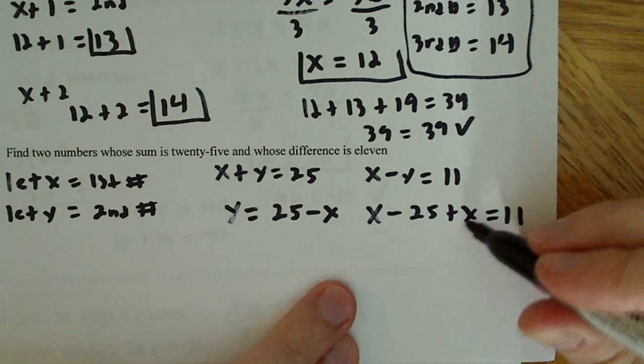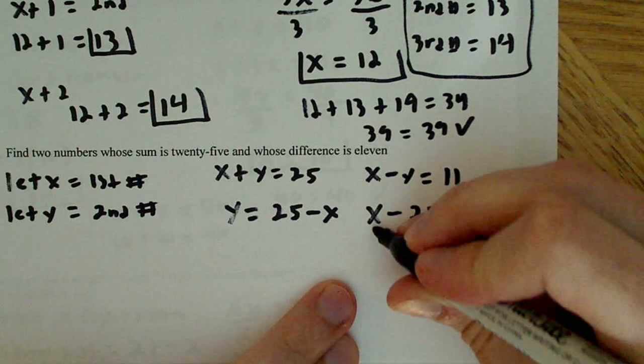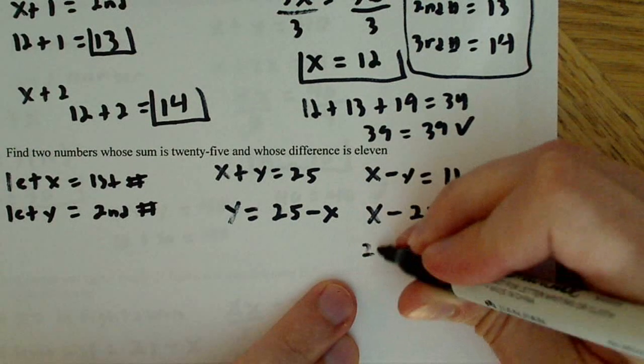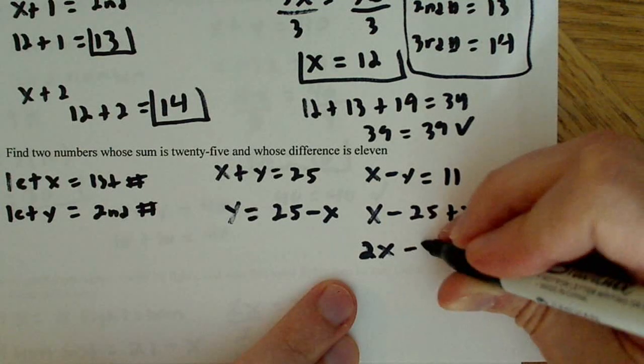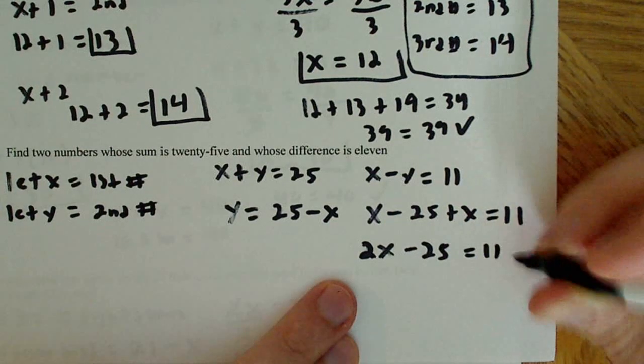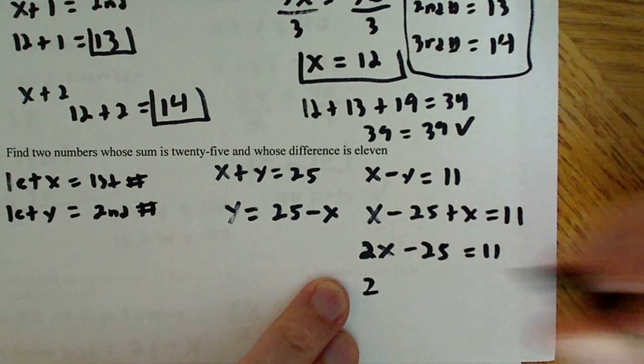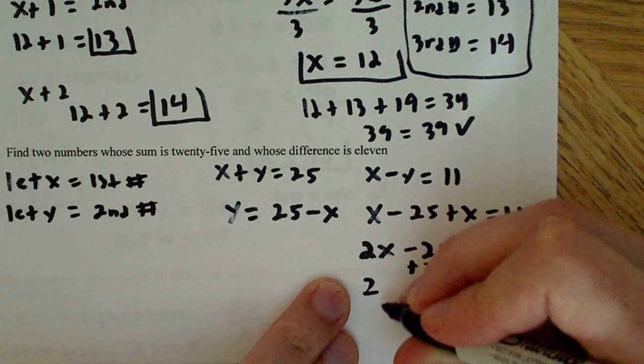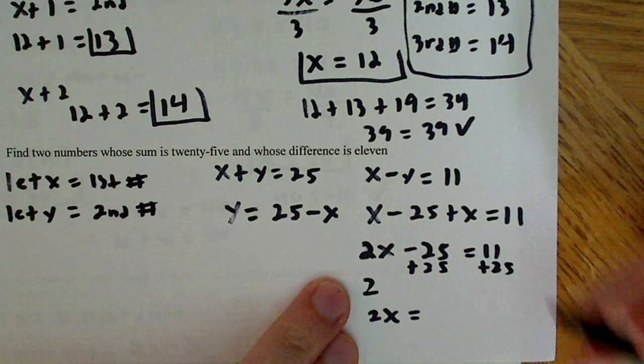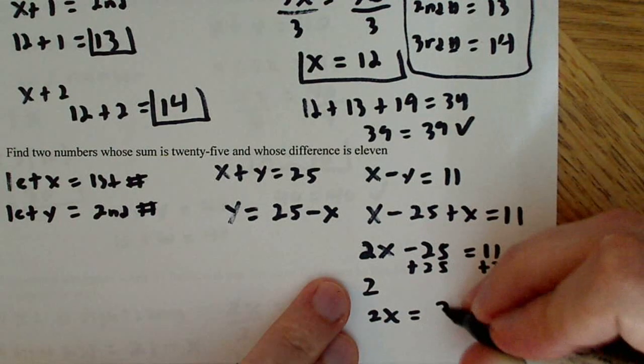And then what I'm going to do here is I'm going to add these two together, because 1x plus 1x is 2x. So that's 2x minus 25 is equal to 11. And then what I'm going to do here is I'm going to add 25 to both sides. Okay? So I'm going to get this 2x is equal to 36.